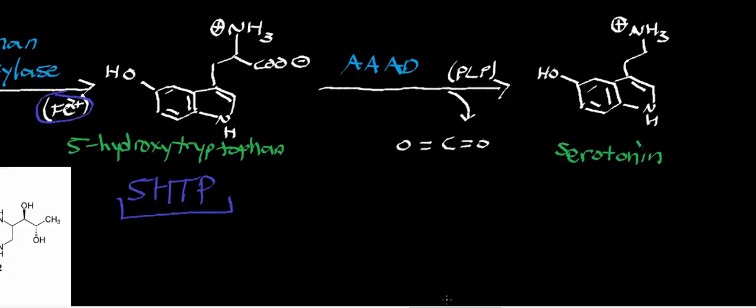Once we generate 5-HTP, it's going to get decarboxylated by aromatic amino acid decarboxylase. You can certainly look at the mechanism of pyridoxal phosphate-dependent decarboxylases. This is pyridoxal phosphate-dependent. It's going to decarboxylate the alpha carbon. The carboxyl group that's going to be lost as CO2 is going to be this one. Here's our carbon dioxide that gets lost. A pyridoxal phosphate-dependent mechanism. And you wind up with serotonin at the end.